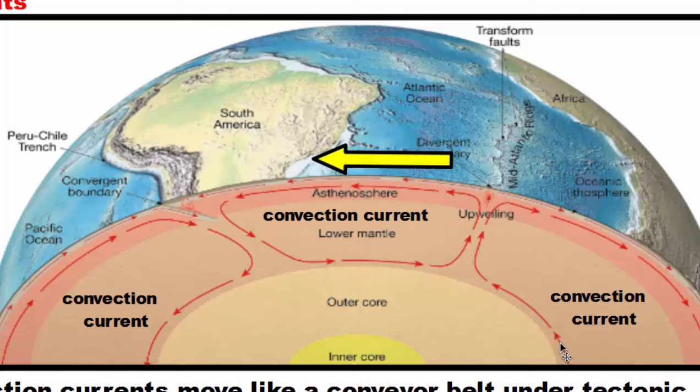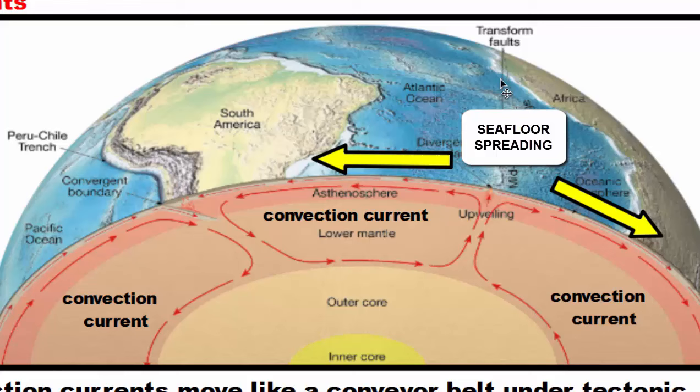If we take a look to the right, this convection current again shows the lower mantle being heated up by the core — the warm material rises, cools, and then sinks, creating this wheel-like motion again. As a result, the plate moves this way. Because of these convection currents, the plates are moving in opposite directions, which allowed seafloor spreading to occur and then the separation of South America and Africa.